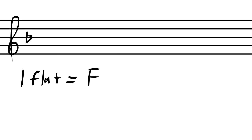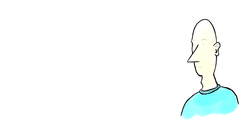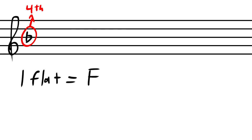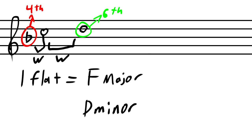One flat. That's B flat. It's the fourth of F. Yay. Because it's the fourth, if we walk up two whole steps to D, now we're on the sixth scale degree for our minor key. The flat minor keys all work like this.